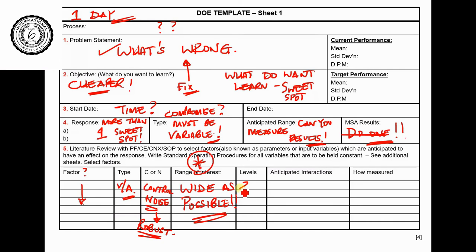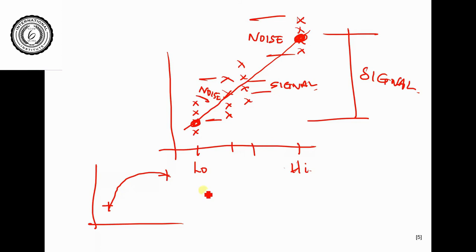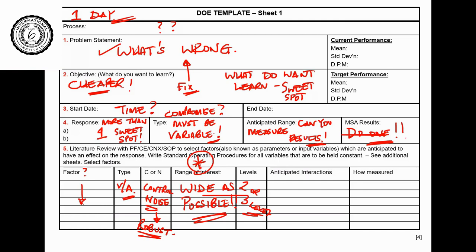Then it asks: are we using two levels or three levels? With two levels — high and low — the relationship assumed is a straight line. But the relationship might be curved. Two points are not good enough to pick up a curve, so for that you'd do a three-level test. The question is: do you think the relationship is linear, or do you think it's curved? That determines your levels.